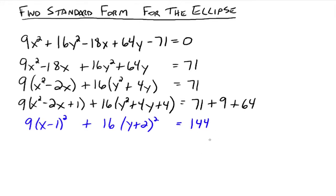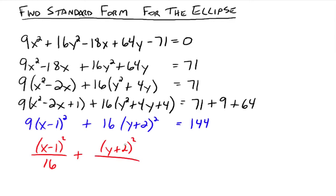Our standard form needs a 1 on the right side, so divide both sides by 144. That gives x minus 1 squared over 16 plus y plus 2 squared over 9 equals 1, since 9 over 144 reduces to 1/16th and 16 over 144 reduces to 1/9th. Now we have our standard form.